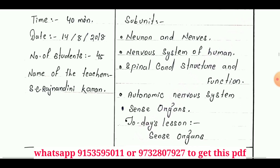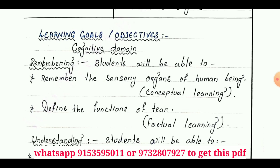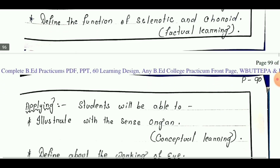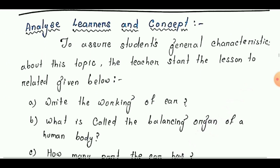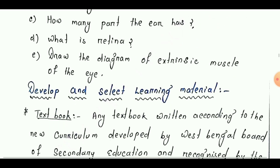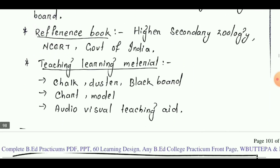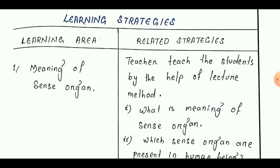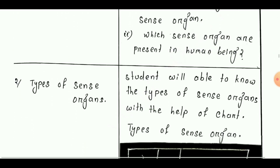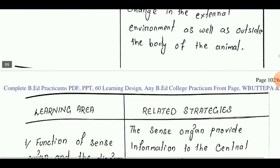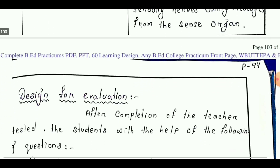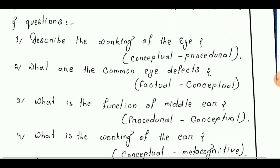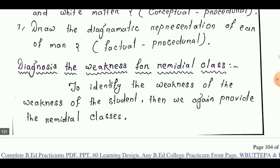Learning design number 16 is taken from class on the lesson 'Sense Organs.' Learning goals are: remembering, understanding, applying, analyzing, evaluating, and creating. Next we analyze learner and concept, then develop and select learning materials. The learning strategy shows learning area on the left side and related strategies on the right side, covering the definition and significance of sense organs. The last point is design for evaluation, followed by diagnosing the weakness for remedial class.